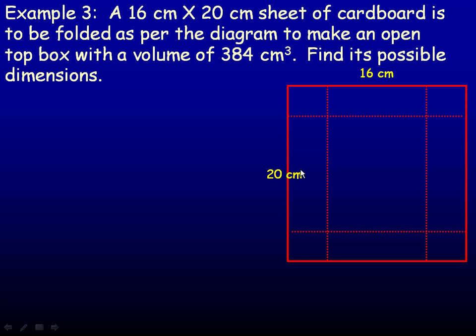A box that has a bottom, four sides, but no top. And we're told that the volume of this box is supposed to be 384 cubic centimeters. We're asked to find its possible dimensions.